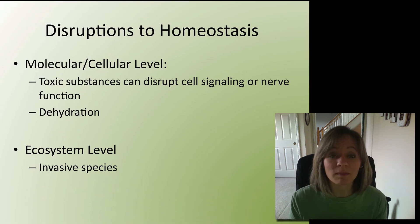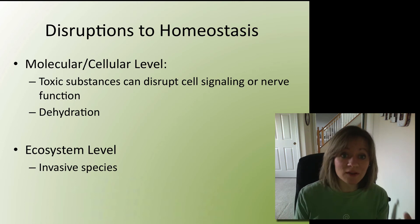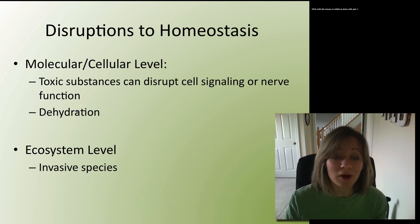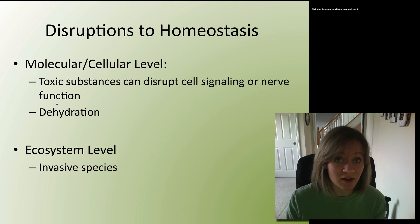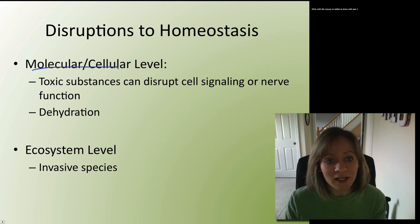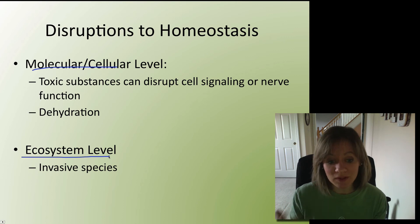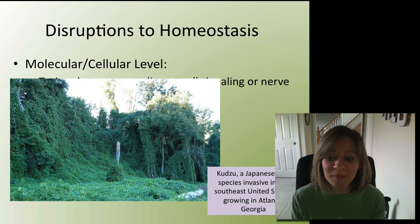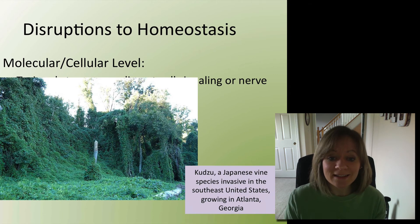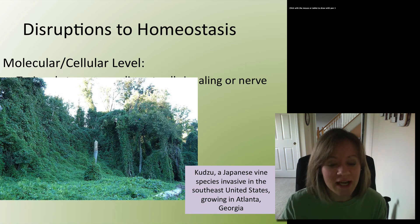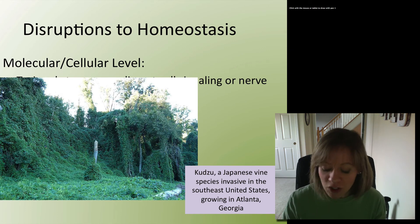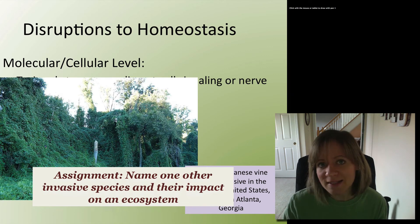We learned last unit that there can be many disruptions to homeostasis, even at the molecular and cellular level. You did projects about drugs and how toxic substances can disrupt cell signaling and nerve function. Another example is dehydration of your cells and losing tonicity — that's at the molecular and cellular level. But we can also have an ecosystem-level disruption. A really cool example, although awful, is invasive species. Here's the Japanese kudzu, a vine that's growing in Atlanta, Georgia, and you can see how this invasive species is taking over the entire ecosystem and disrupting the normal balance and homeostasis. Come up with one other invasive species and how it impacts that ecosystem.